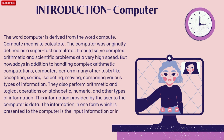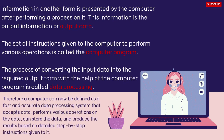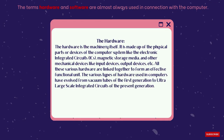The information in one form which is presented to the computer is the input information or input data. Information in another form is presented by the computer after performing a process on it — this is the output information or output data. The set of instructions given to the computer to perform various operations is called the computer program. The process of converting input data into the required output form with the help of the computer program is called data processing.